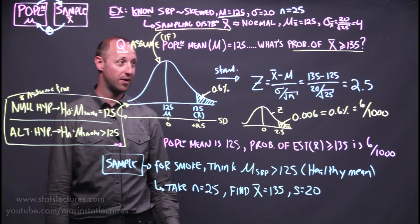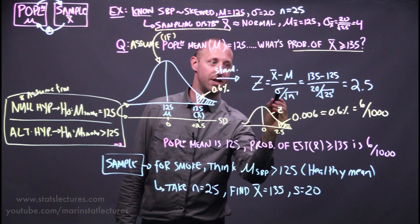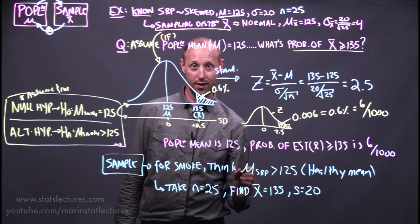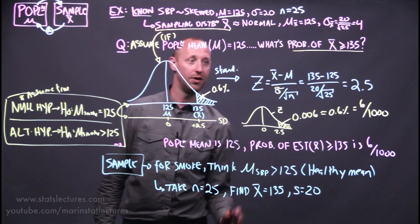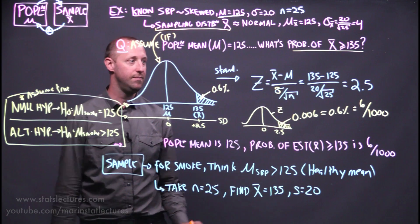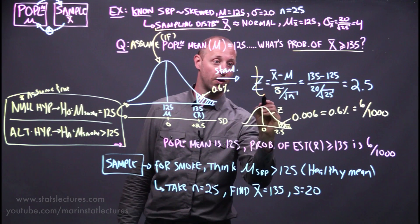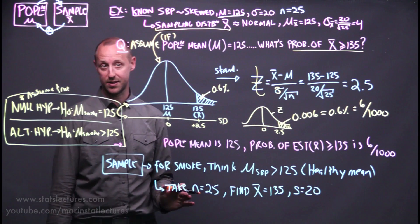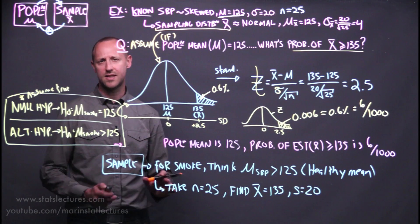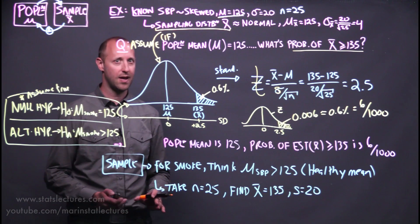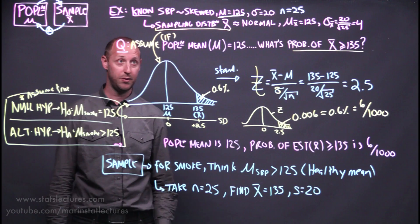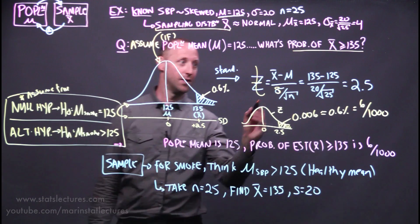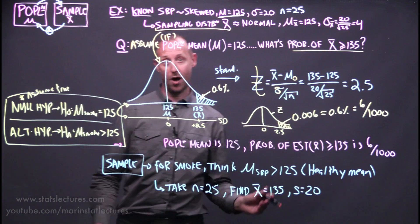We can go through and run through the exact same calculation. Things that are going to change is rather than knowing the population standard deviation, we're going to have to sub in our estimate of it. Because of that, we're going to have to use a t distribution rather than the z, although we'll see t and z are approximately the same. I like to think of the t distribution as being the normal distribution for samples.